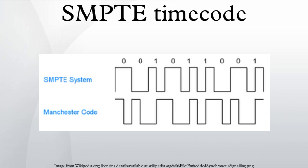Longitudinal SMPTE timecode is widely used to synchronize music. A frame rate of 30 frames is often used for audio in America, Japan, and other countries which rely on a 60 Hz mains frequency and use the NTSC television standard. The EBU standard frame rate of 25 frames is used throughout Europe, Australia, and wherever the mains frequency is 50 Hz and the PAL or SECAM television standards are used.